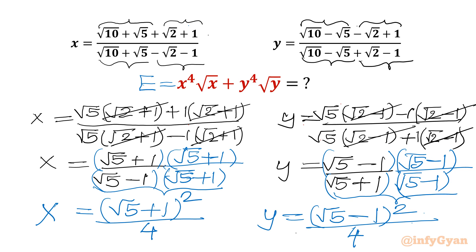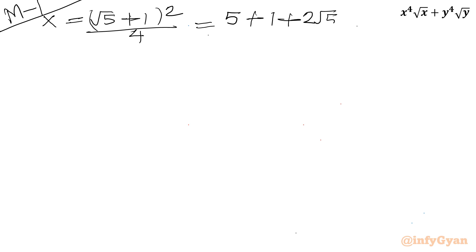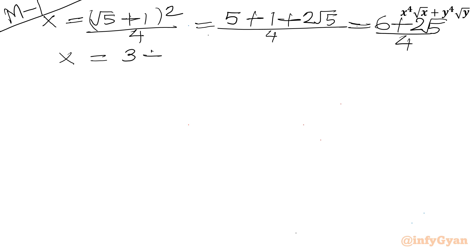I will demonstrate two different approaches. For Method 1, let me expand x = (√5 + 1)² / 4. Using the (a + b)² formula: √5² + 1 + 2√5 = 6 + 2√5, divided by 4, which gives x = (3 + √5) / 2.